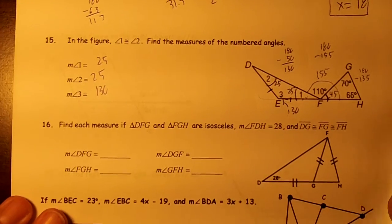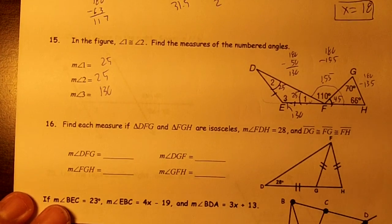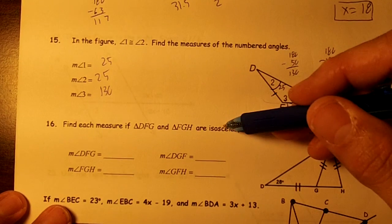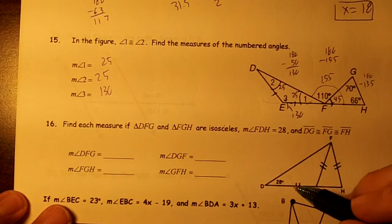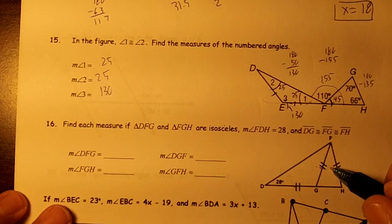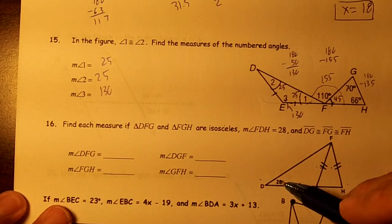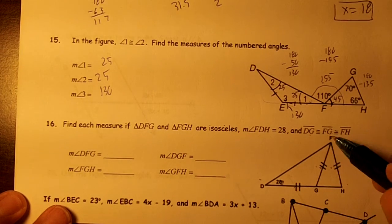Okay, triangles DFG and FGH are isosceles. That means that's equal to that, that's equal to that. FDH is equal to 28, which is that angle. DG is congruent to FG, so all three of these sides are the same.